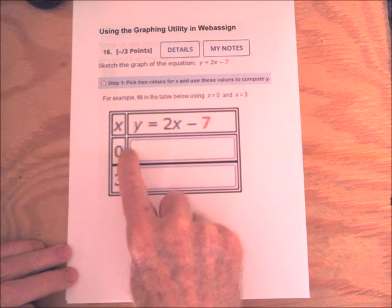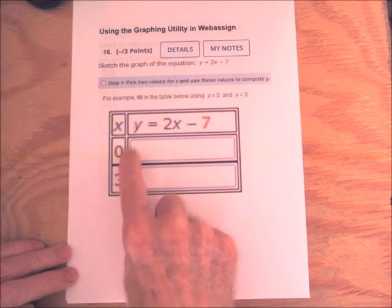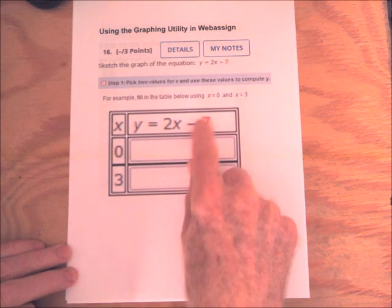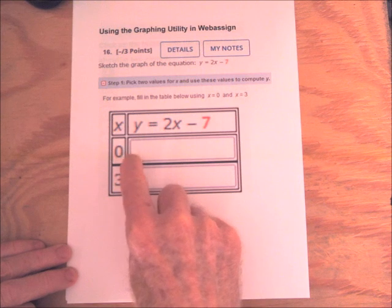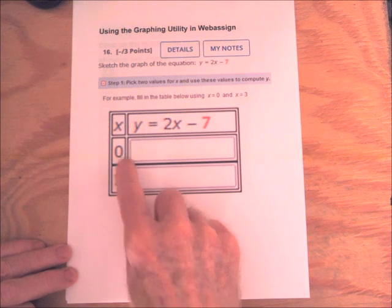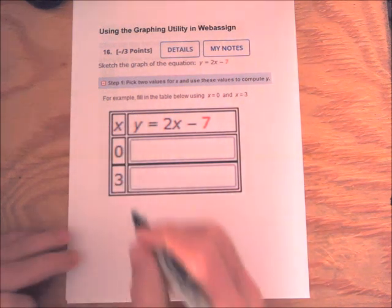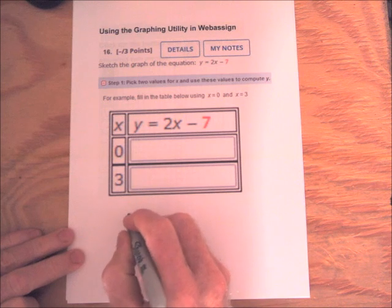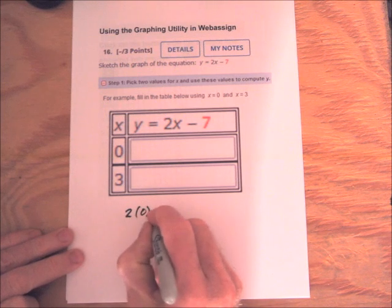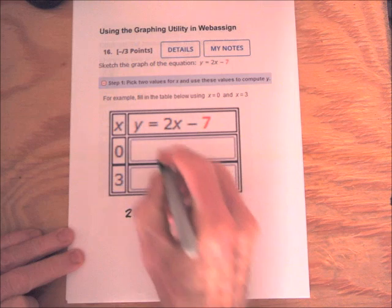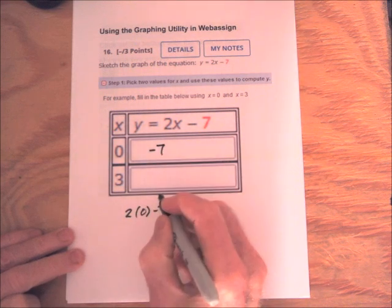we can pick two values of x and compute y. WebAssign picked two values for us, 0 and 3. So if x is 0, y is going to be 2 times 0 minus 7, which is negative 7. So we can fill in negative 7 there.